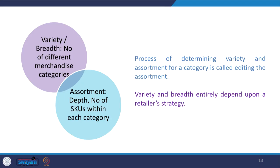It is all about keeping a well-balanced selection of goods that not only match customer demand but are also aligned with your target market and location. The process used for determining the variety and assortment for a category is called editing the assortment. Variety or breadth refers to the number of different product categories offered; assortment or depth refers to the number of SKUs offered within a particular product category.